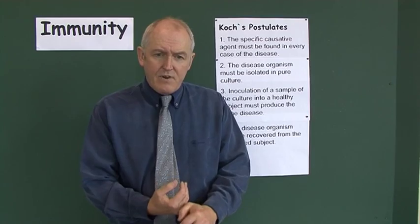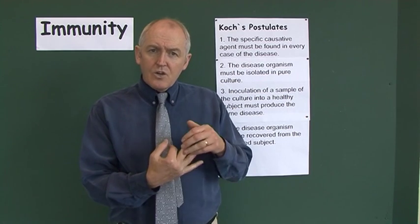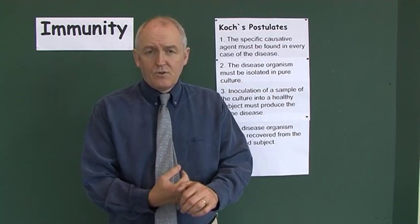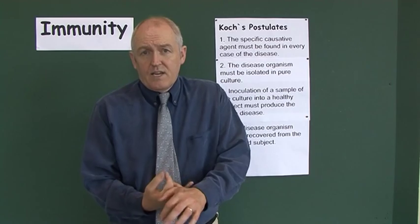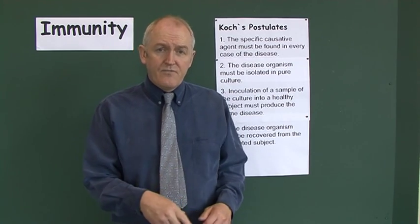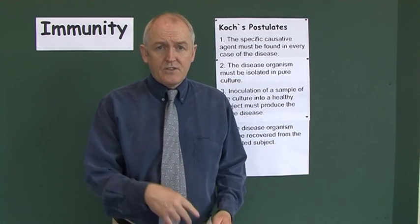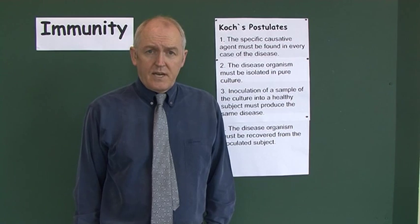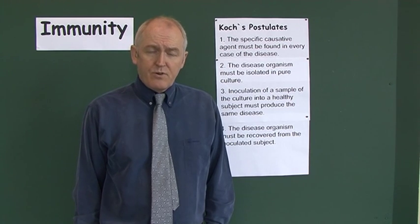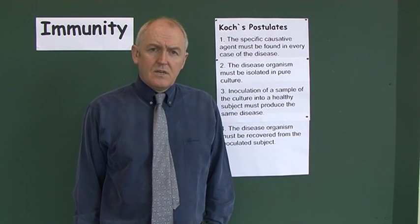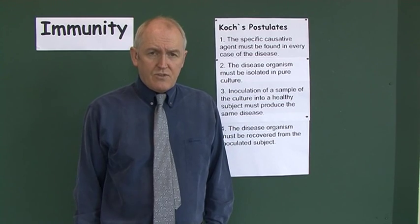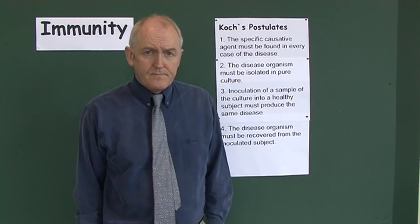To summarize: you must be able to identify the bacteria in lesions of the case, grow the bacteria up, cause the disease in a new subject by inoculating them with that bacteria, and then from the new subject you should be able to culture the organism once again. These are Koch's postulates, demonstrating that a disease is infectious and transmissible in nature.